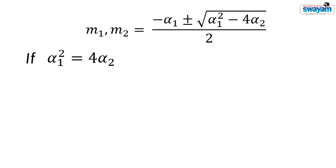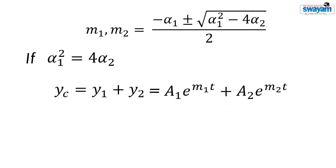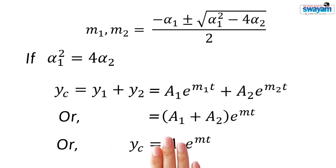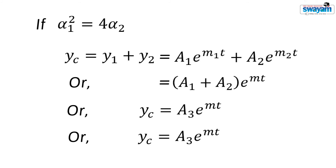If α₁² is equal to 4·α₂, both roots are equal and the complementary solution is given by this expression, because m₁ equals m₂ — suppose that it is equal to m. Since a₁ and a₂ are constants, let a₁ + a₂ equal a₃, so the complementary solution is yc = a₃·e^(mt). But we have only one arbitrary constant, and hence we cannot obtain the original function from the second-order differential equation. Therefore, we need another term independent of a₃·e^(mt). Let this term be a₄·t·e^(mt), so the complementary solution in this case is given by this expression.